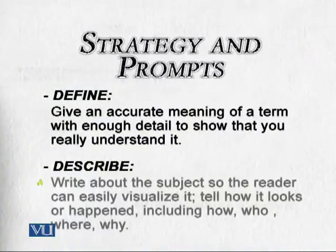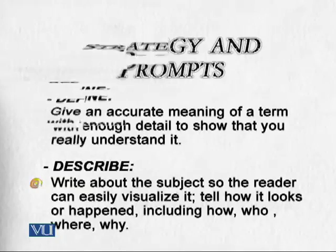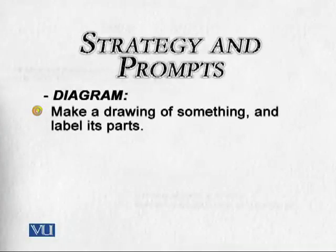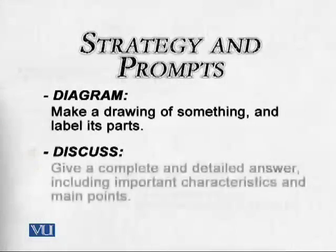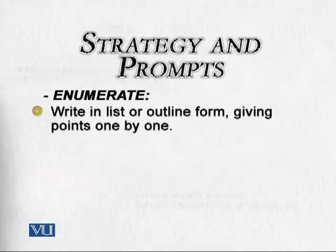'Describe' means write about the subject so the reader can easily visualize it. There are writers who paint pictures with words — they take you to that place. The words are the writer's and the experiences are yours. 'Diagram' means make a drawing of something and label its parts. 'Discuss' means give a complete and detailed answer including important characteristics and main points. 'Enumerate' means write in list or outline form — just list out points one by one. Simple listing paragraphs are all about enumeration.